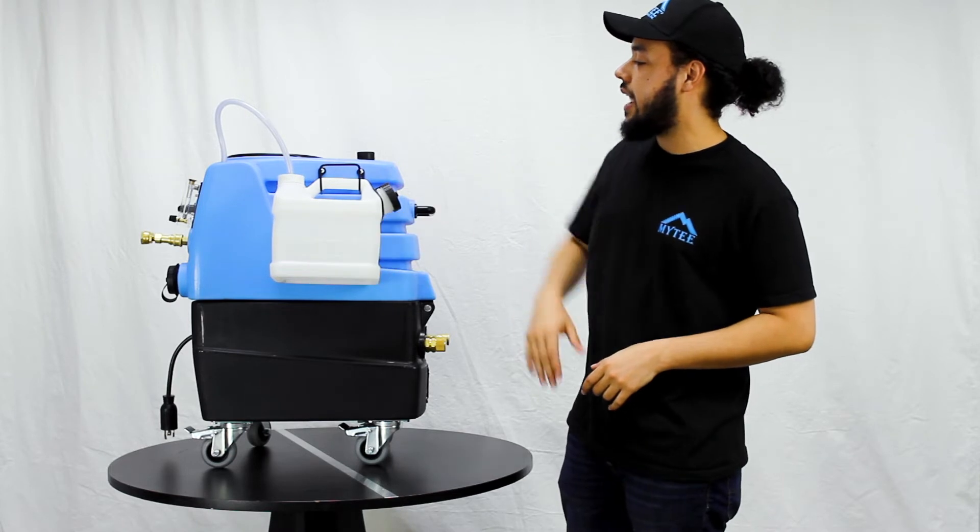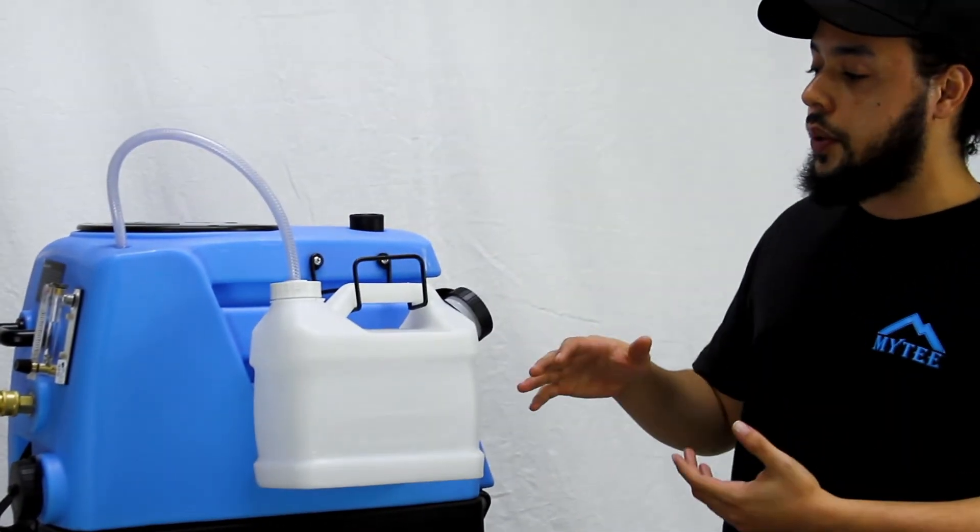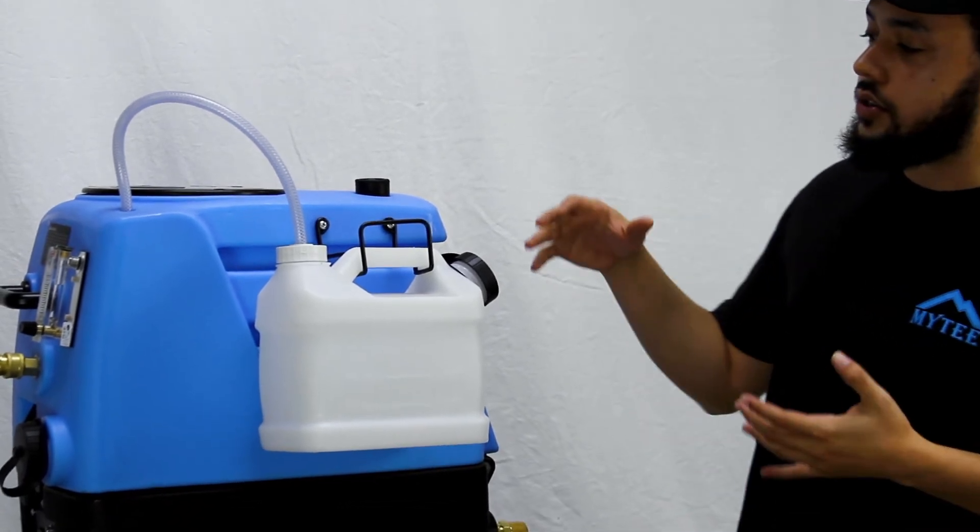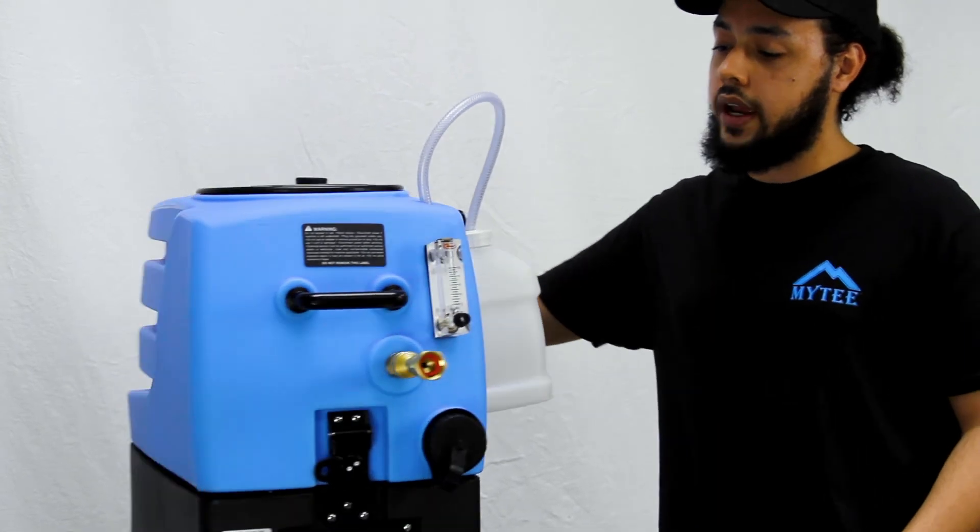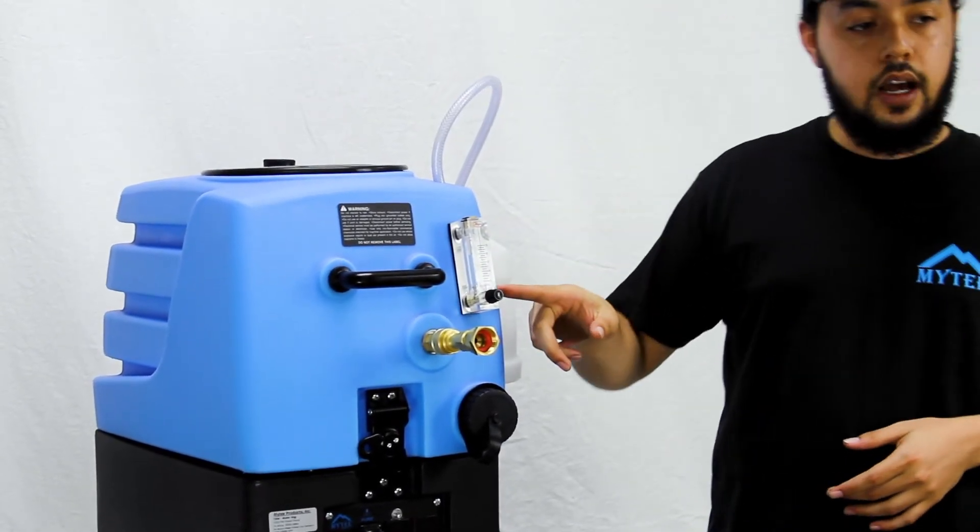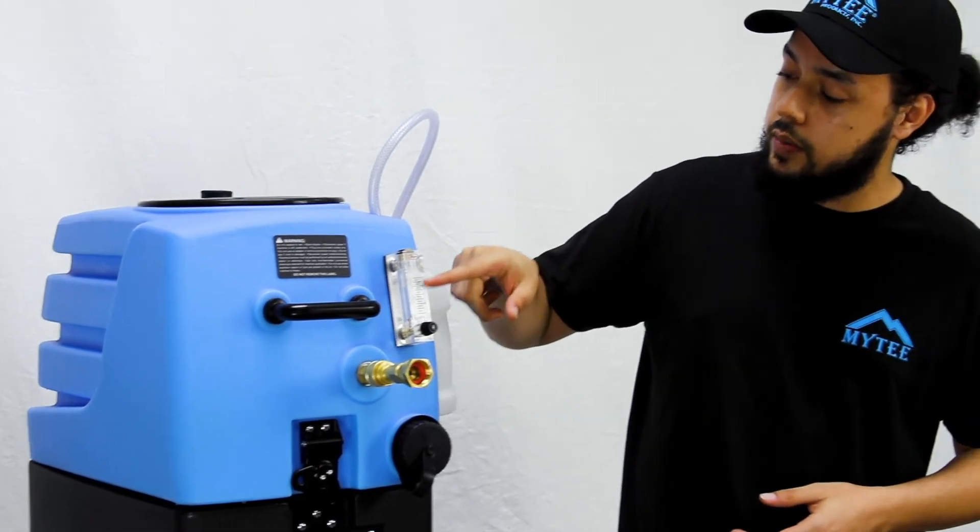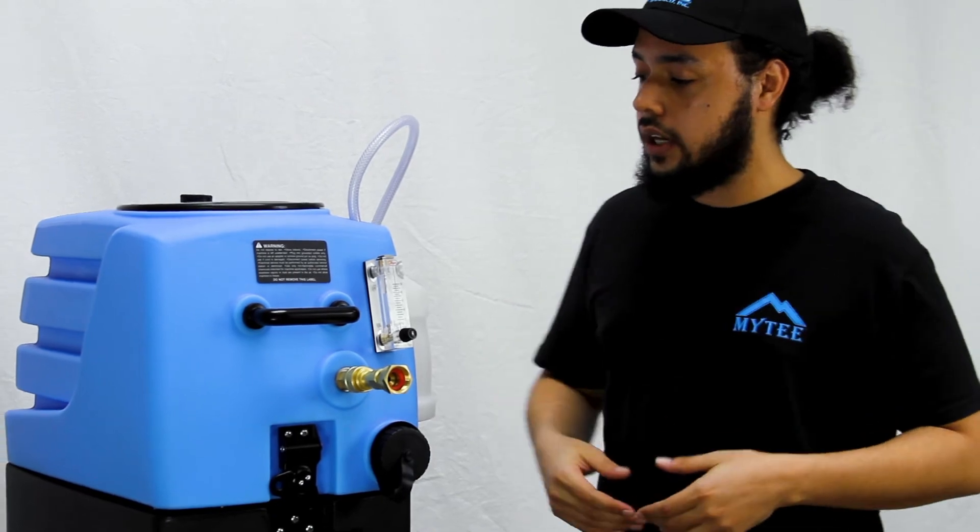Right here on the side on this hanger, this is a chemical jug. You can fill this with any desired chemical that you want to have added into your solution. It will be siphoned in at a set gallon per hour rate. You can set that rate to whatever you'd like using this knob right here, and there's your meter so you can check on how much chemical is being metered into your solution as you're using it.